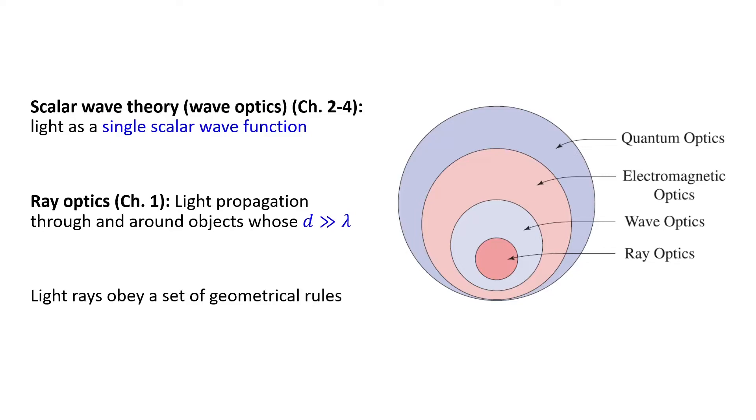This figure symbolically shows which theory is more complete. As you see, quantum optics is the most comprehensive theory of light. And ray optics is the least complete one.